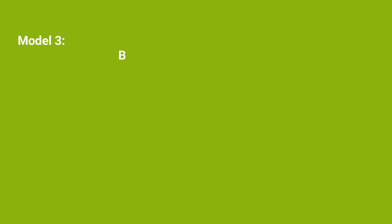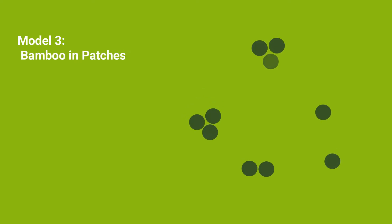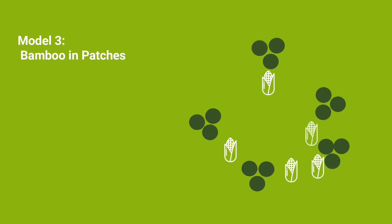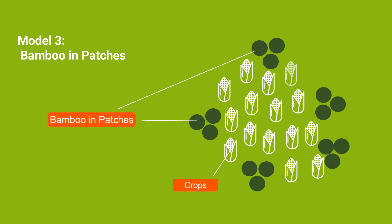We can also have the patches model. Depending on the size of your farmland, you can have a group of three or five clumps of bamboo in one portion, and the same group in another portion — so the bamboo occurs as patches across your farmland, with food crops or livestock in between. You can also use bamboo as windbreaks to protect your crops, or as boundary planting to delineate your farmland.